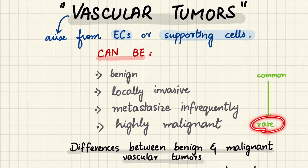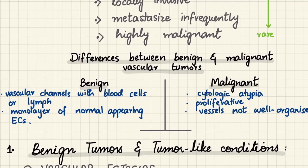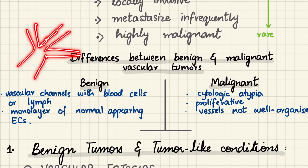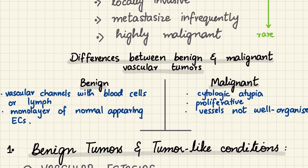The differences between benign and malignant vascular tumors: benign vascular tumors have vascular channels lined with well-differentiated endothelial cells, and within these channels there will be blood cells and/or lymph. Malignant types, on the other hand, show cytologic atypia — the cells are atypical or abnormal — they are highly proliferative, dividing rapidly and extensively, and the vessels are not well organized.